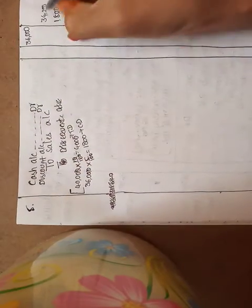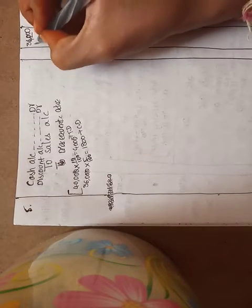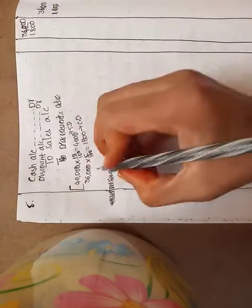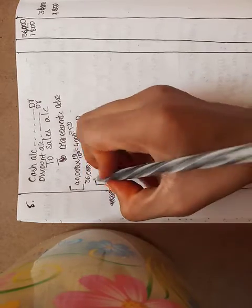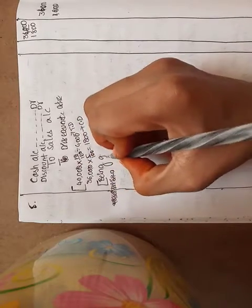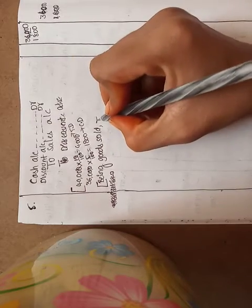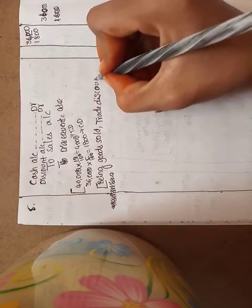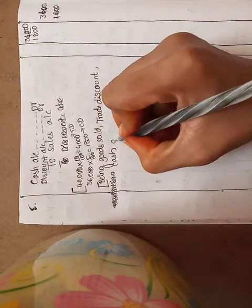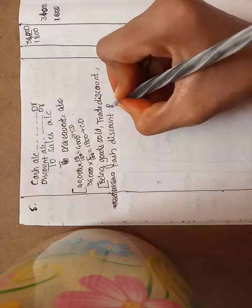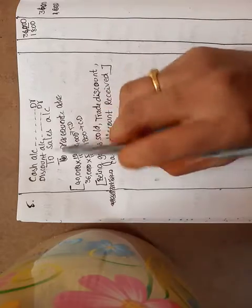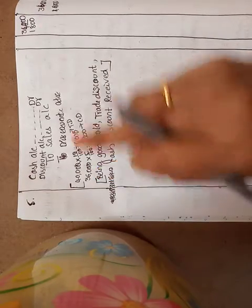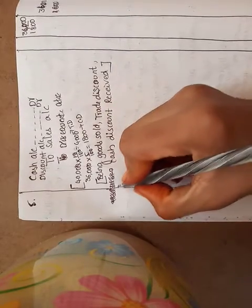Cash Account debit ₹34,200, Discount Account debit ₹1,800, to Sales Account ₹36,000. Narration: Being goods sold, trade discount and cash discount received. It is a cash transaction, so the entry is Cash Account debit, Discount Account debit, to Sales Account. The total amount after deducting trade discount is recorded under Sales Account. Next transaction: